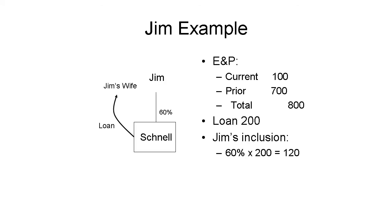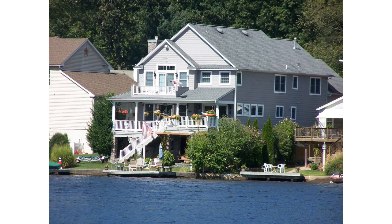In the example we covered, the loan to Jim's wife was an obligation of a related U.S. person, and thus was U.S. property. Similarly, if Schnell had bought U.S. real estate or machinery located in the U.S., Jim would have a 956 inclusion.